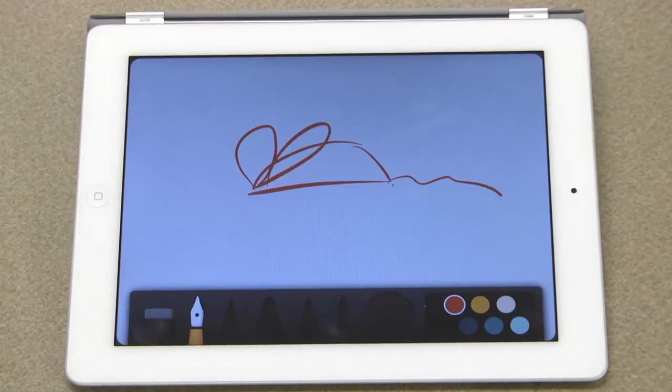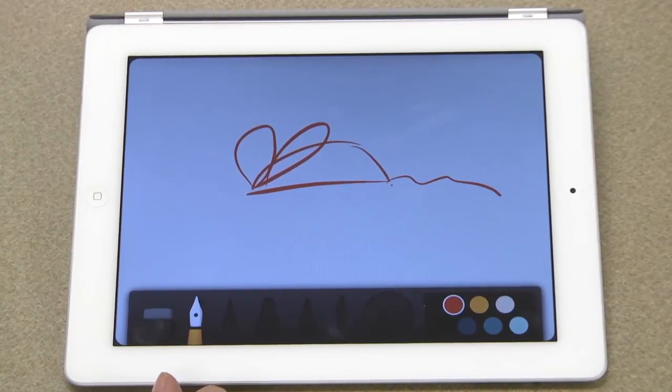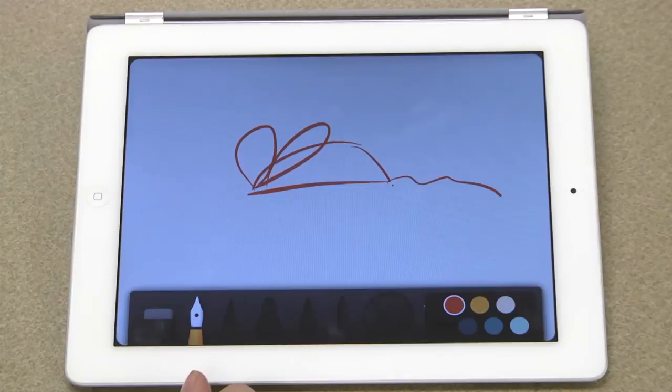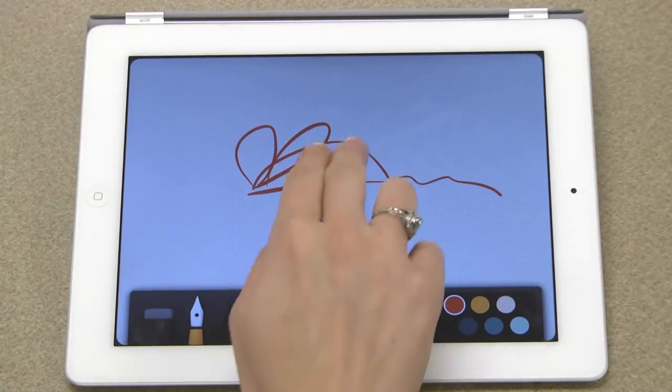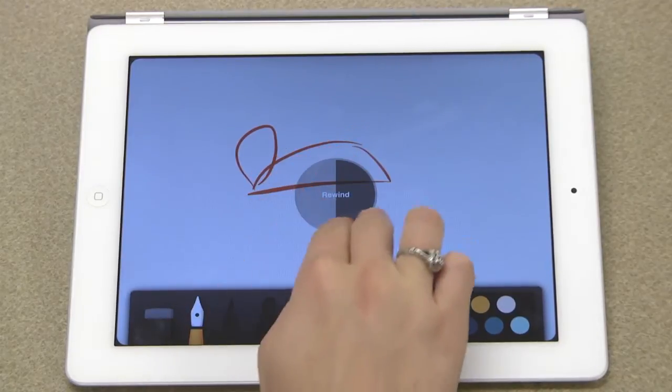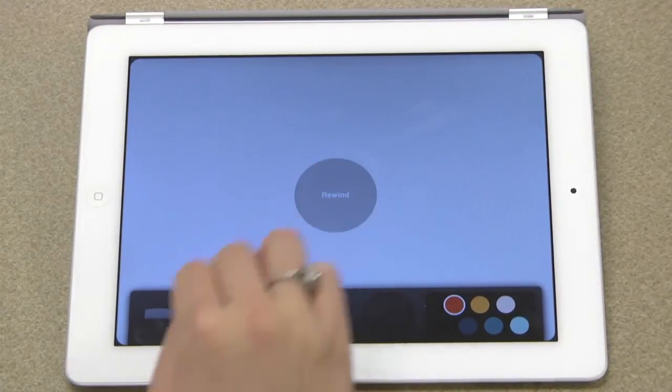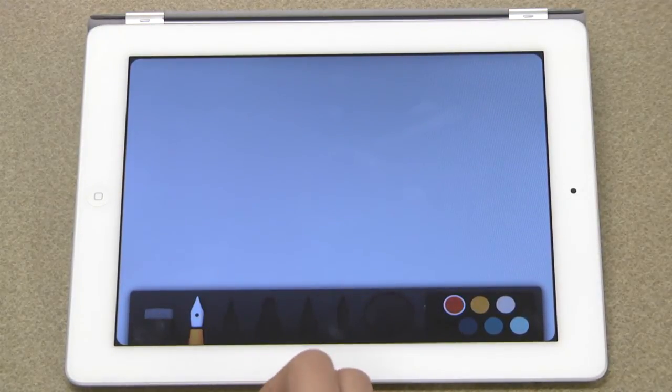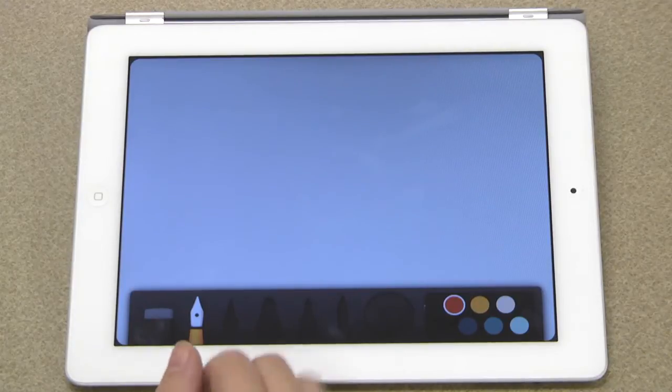One of the neatest features of Paper 53 is the rewind option. To rewind, put two fingers on the screen and scroll them counterclockwise. You can also un-rewind by scrolling clockwise.